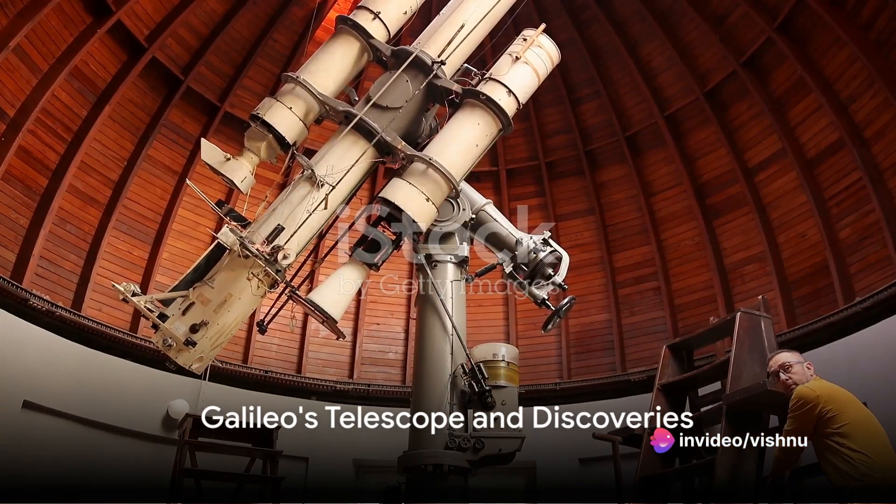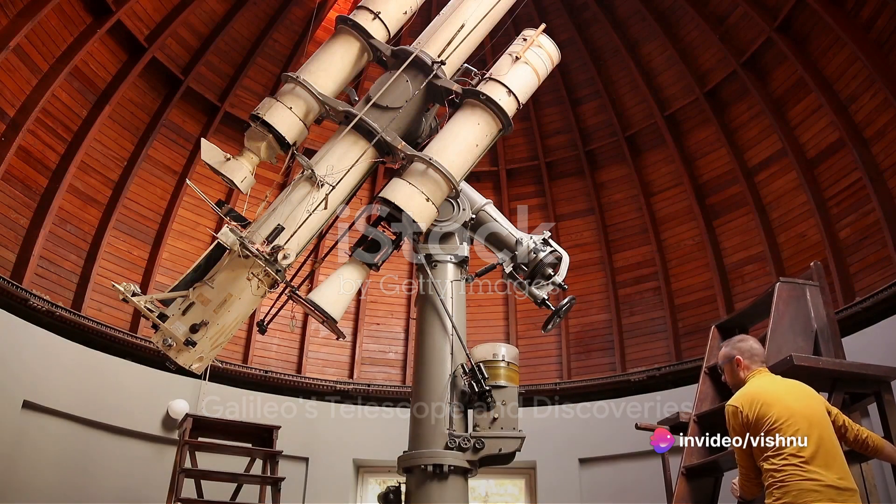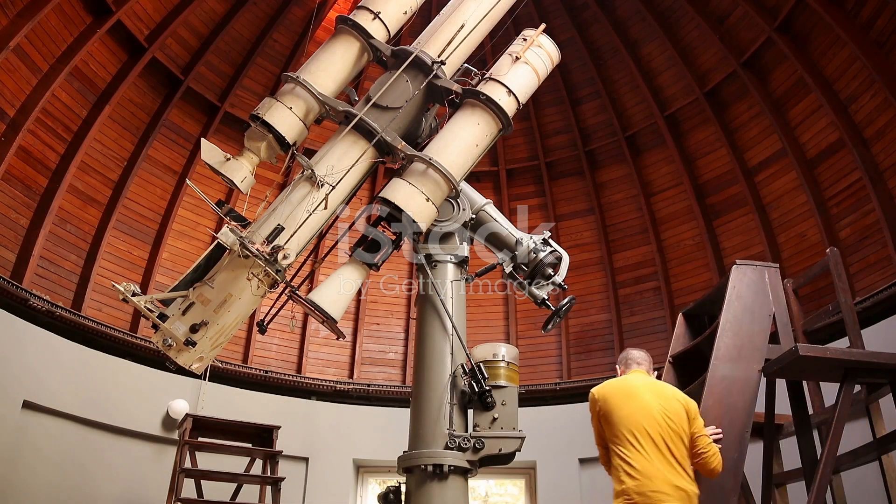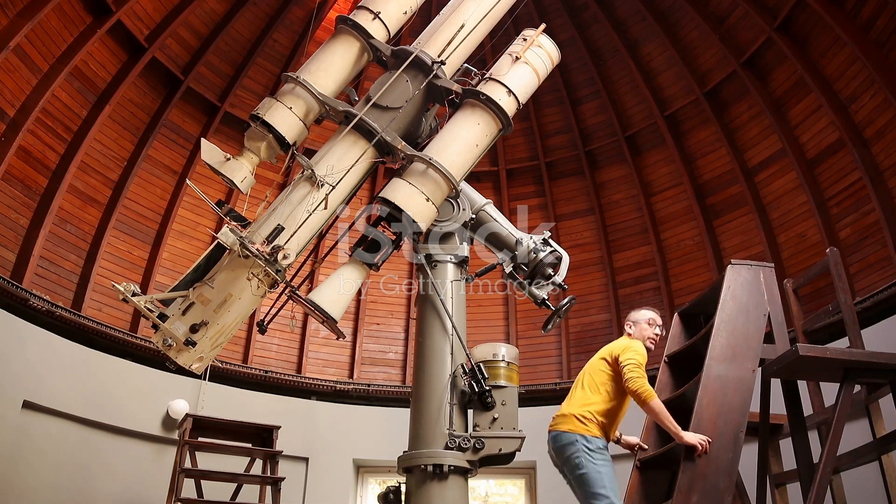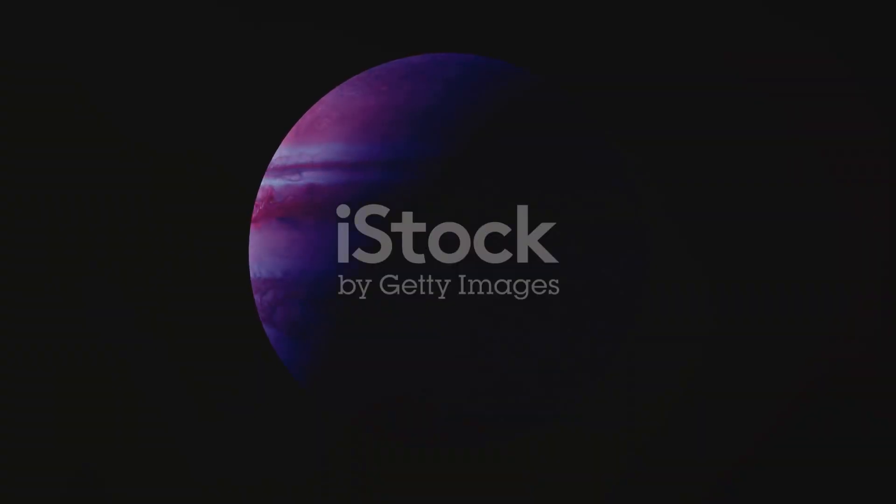In 1609, Galileo heard about a telescope built by a Dutch eyeglass maker. He soon built his own, 32 times more powerful, and started studying the heavens.